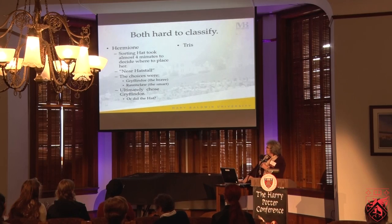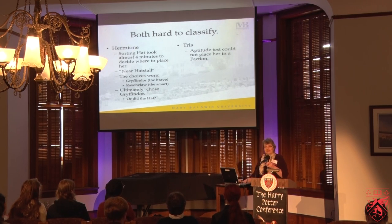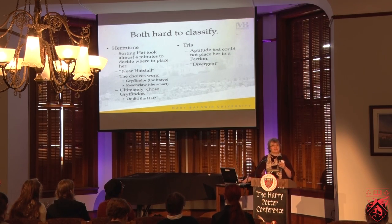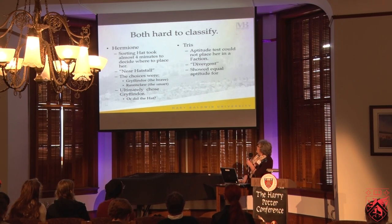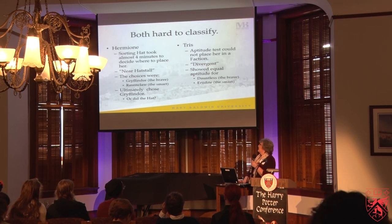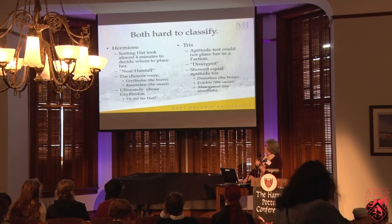I like to think the Sorting Hat listened to choices for other people besides Harry. In Divergent, all the kids are subjected to an aptitude test before they choose their faction for life. Tris was a Divergent, meaning the aptitude test could not place her in a single faction. She showed equal aptitude for Dauntless — the brave — Erudite — the smart — and Abnegation — the unselfish. One of the central themes of the series is that being brave and being unselfish are really the same thing. So in some ways Tris was faced with the exact same choice as Hermione, and she also chose brave.